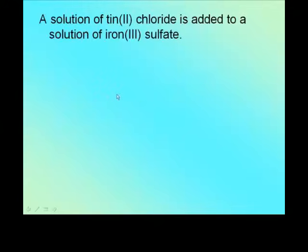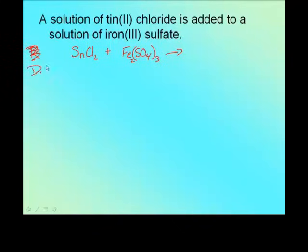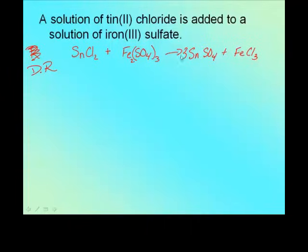Next: a solution of tin 2 chloride is added to a solution of iron 3 sulfate. So SnCl₂ plus Fe₂(SO₄)₃. Type of reaction: double replacement. Tin and iron are going to replace each other, giving tin sulfate plus FeCl₃. Quickly balancing: put a three on SnCl₂, a three on FeCl₃ side, a two on Fe₂(SO₄)₃, and done.